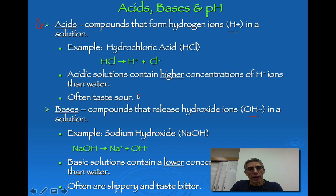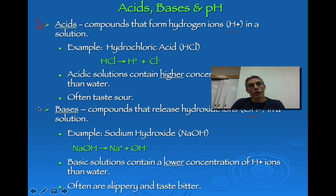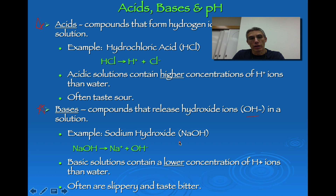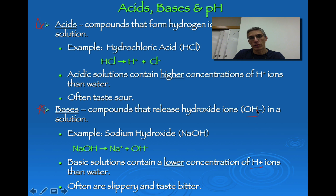One characteristic of an acid is that it often tastes sour — think of a lemon or grapefruit. On the flip side, bases have more OH- ions than H+ ions in solution. A good example of a base is sodium hydroxide, often used in the classroom. Basic solutions contain a lower concentration of H+ ions than water. Bases tend to taste bitter and feel slippery. To summarize: equal H+ and OH- means neutral; more H+ means acid; more OH- means base.